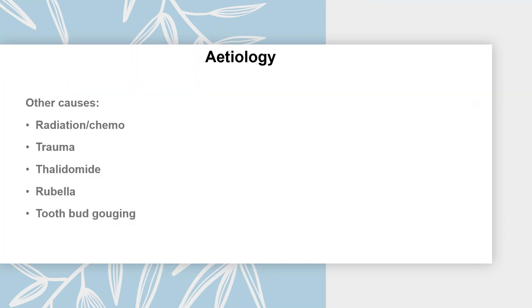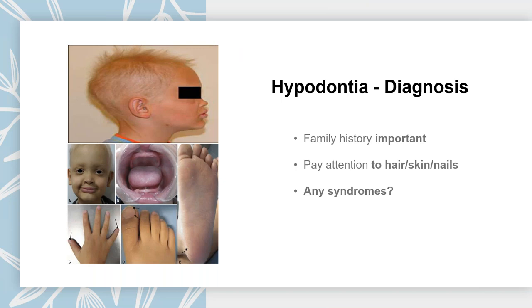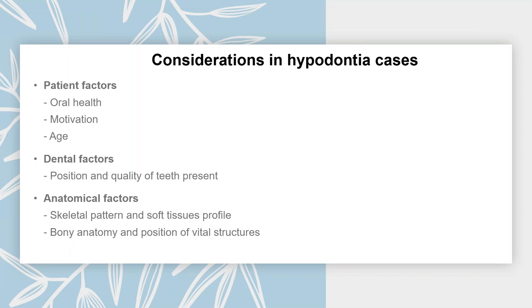Other causes of hypodontia include radiation, chemotherapy, trauma, thalidomide, rubella, and tooth-bud gouging in primary dentition. To diagnose hypodontia, after thorough history and examination, always remember family history is important. Look at other aspects like hair, skin, and nails, and ask about syndromes in the family. When it comes to hypodontia cases, consider patient factors — oral hygiene, motivation, and age — dental factors such as position and quality of teeth present, and anatomical factors like skeletal pattern, soft tissue profile, bony anatomy, and position of vital structures.